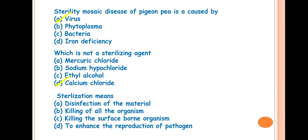Next question is, sterilization means? The answer is B, killing of all the organism. So, the sterilization is the destruction or killing of all the organisms. Let's discuss about the sterilization methods. So, sterilization can be done by three methods. First one is the chemical method, then physical method. Third one is the mechanical method.